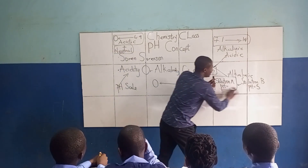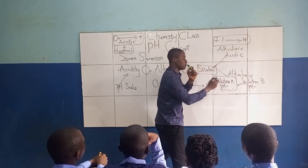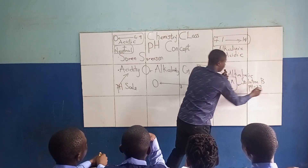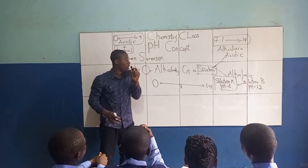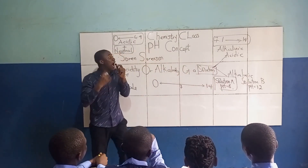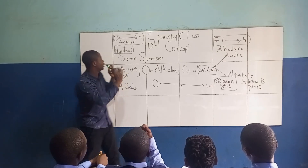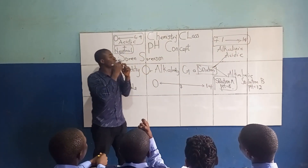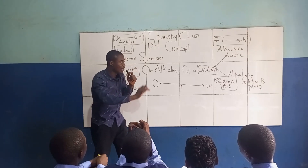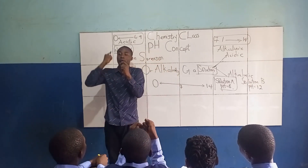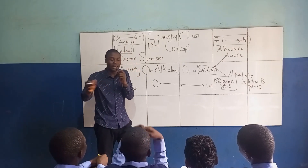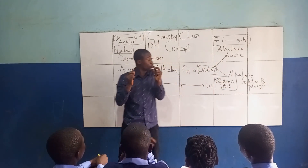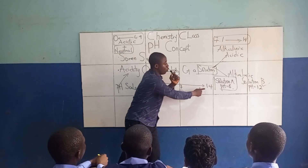Now let's use an alkalinity example. Solution A has a pH value of 8, and Solution B has a pH value of 12. Both are alkaline since they fall between 7.1 and 14. Which is more alkaline? Since alkalinity increases towards 14, Solution B with pH 12 is closer to 14, making it more alkaline.